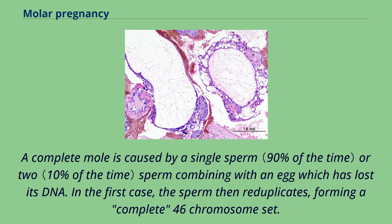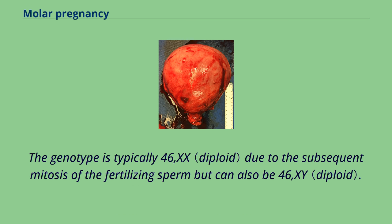A complete mole is caused by a single sperm or two sperm combining with an egg which has lost its DNA. In the first case, the sperm then reduplicates, forming a complete 46 chromosome set. The genotype is typically 46,XX due to the subsequent mitosis of the fertilizing sperm, but can also be 46,XY.